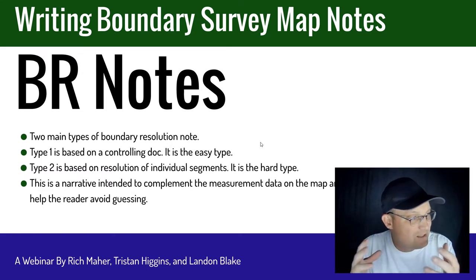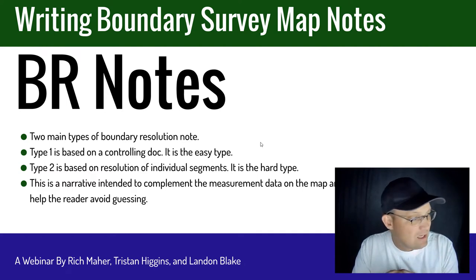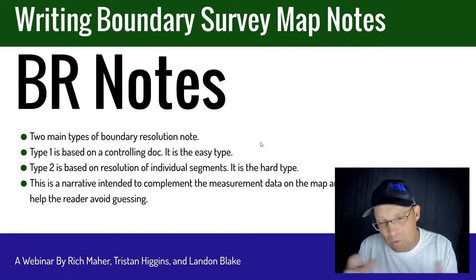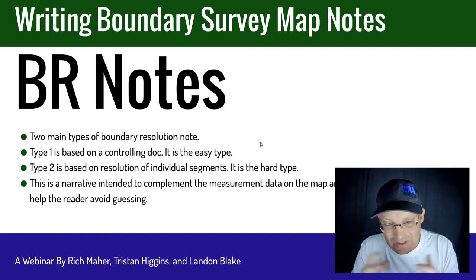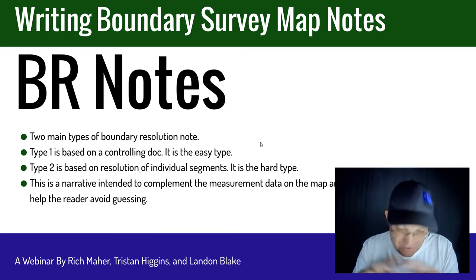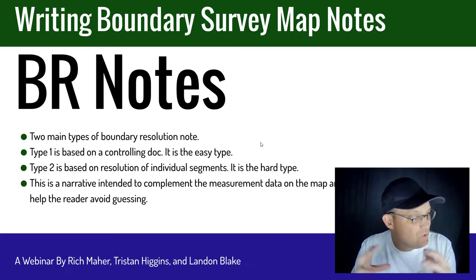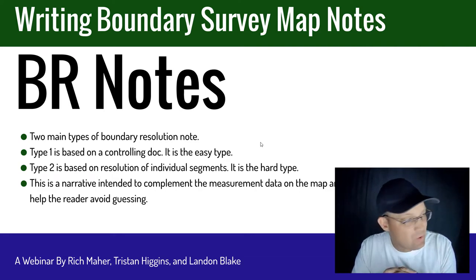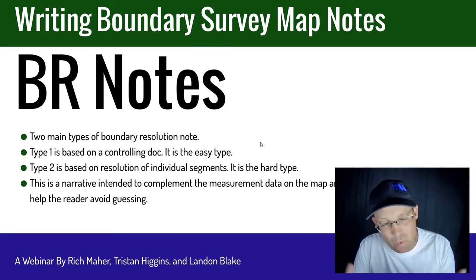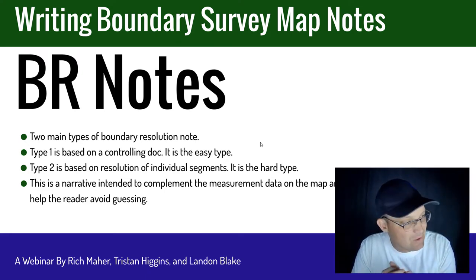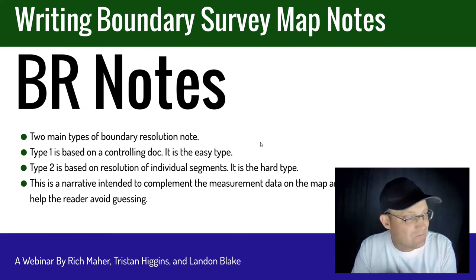We have two main types of boundary resolution note here at Redefine Horizons. The type 1 note is the easy one — it's based on a controlling document. That's when we have a controlling subdivision map, parcel map, or a more modern metes and bounds deed that we can use to establish the parcel boundaries if appropriate. The type 2 is the more difficult note — that's where we don't have a controlling doc, or there's a controlling doc but for some reason we can't hold it in its entirety, and we have to go in and resolve the individual segments.